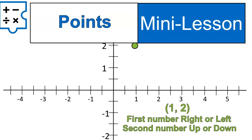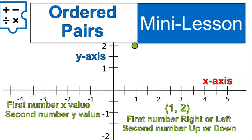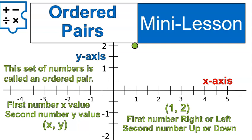The first number tells you your movement right or left — right is positive, left is negative. The second number tells you up or down — up is positive, down is negative. Remember your x and y axes: the first number is called the x-value, that's the value as far as movement on the x-axis. The second number is your y-value, or where it would be located on the y-axis. We could also write an ordered pair as x comma y — that tells us x is first and y is second. These two numbers together are called an ordered pair.